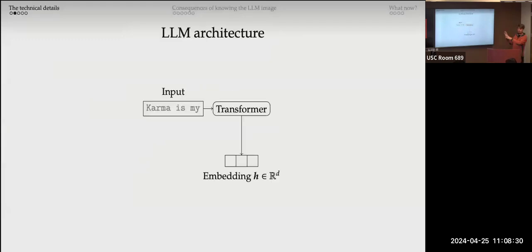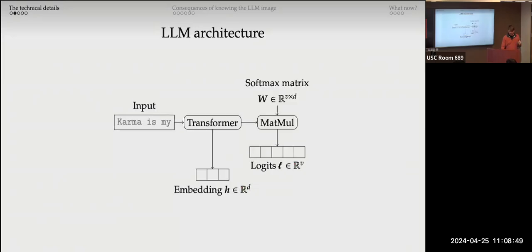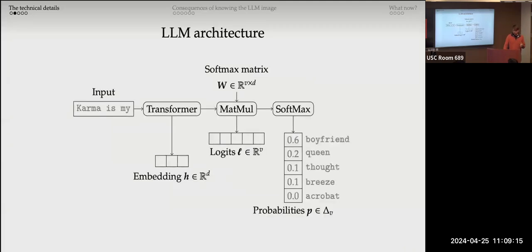To put us all on the same page: a transformer takes an input and generates a contextualized embedding — a representation of what the next word is — in low-dimensional space. This is called D, the embedding size of the language model. To get a distribution over tokens and choose the next token in the sequence, we multiply the embedding by the softmax matrix, which projects it linearly into a V-dimensional space, where V is your vocabulary size. Then you apply the softmax function to convert these into a valid probability distribution.